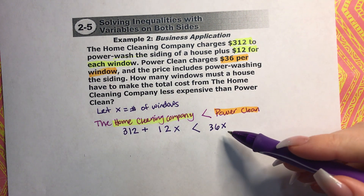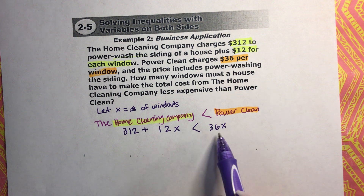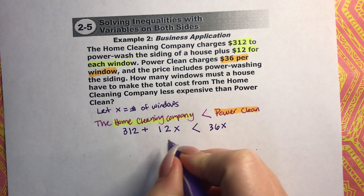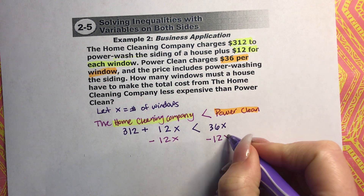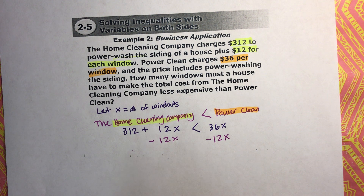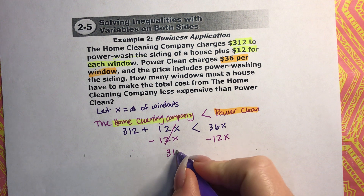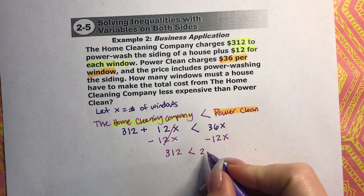Now we just need to solve for X. The variable is already isolated on the right side, so we're going to move the 12X by subtracting — the inverse of a positive is a negative. We're not multiplying or dividing, so we don't flip the sign. This cancels, and we're left with 312 is less than 36X minus 12X, which is 24X.